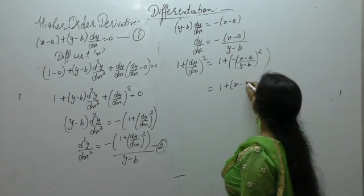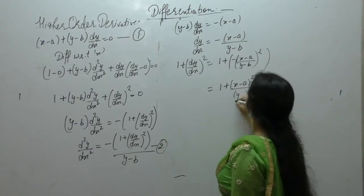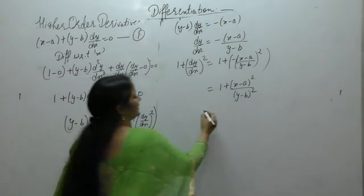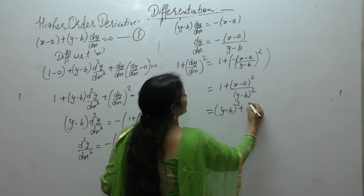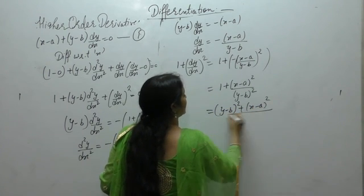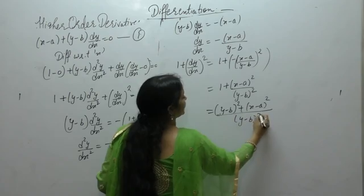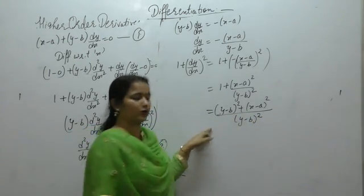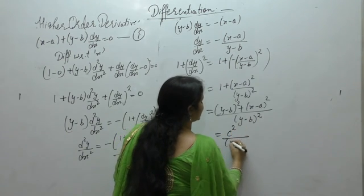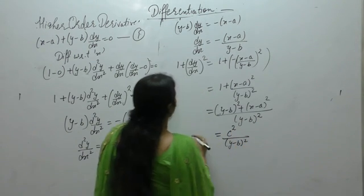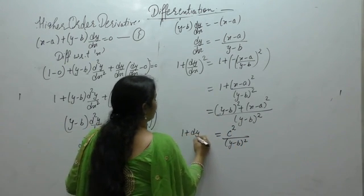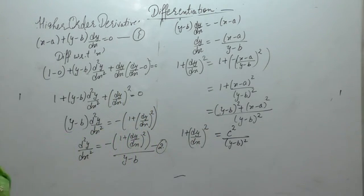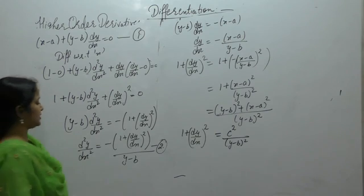1 plus (x minus a)² upon (y minus b)². Taking LCM: (y minus b)² plus (x minus a)² all over (y minus b)². Now x minus a whole square plus y minus b whole square is given equal to c². So this equals c² upon (y minus b)².